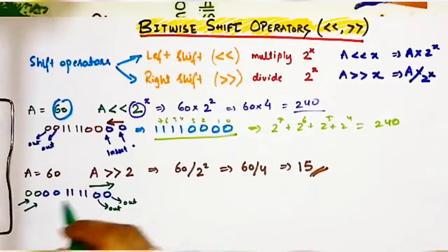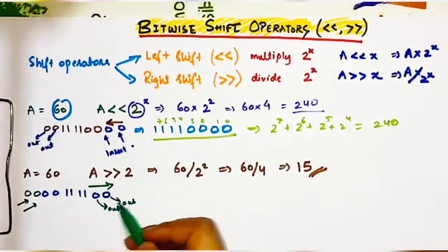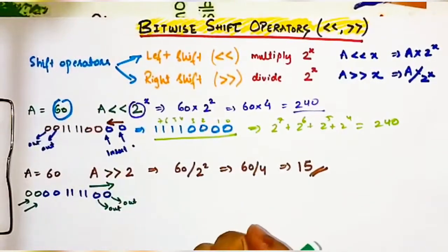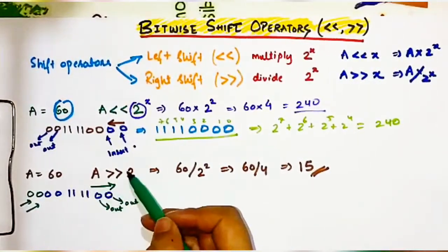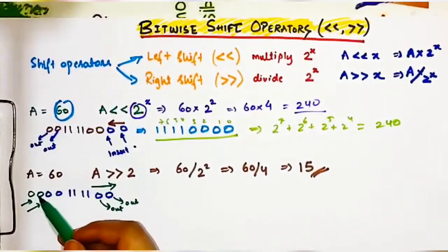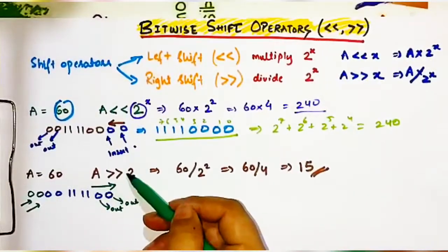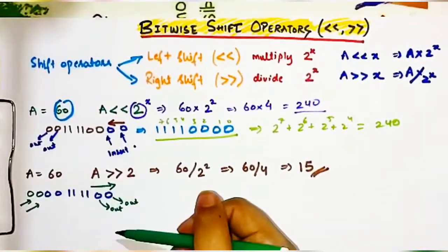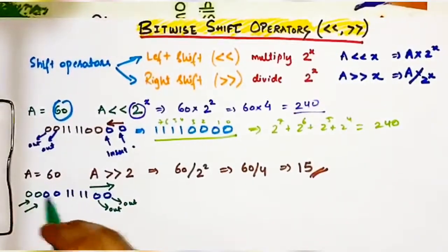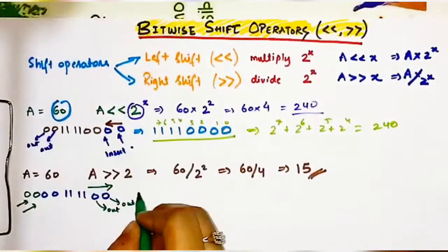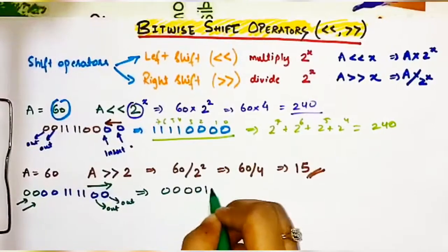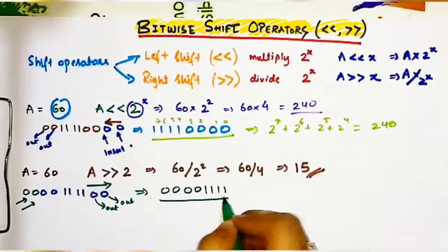Every time we shift, whatever digits pop out — whether 0 or 1 — we always insert zeros on the other side. So if 2 digits pop out, 2 zeros are inserted; if 4 digits pop out, 4 zeros are inserted. We always insert zeros and pop out whatever digits fall off.